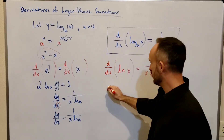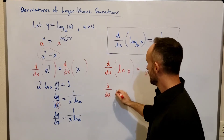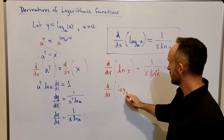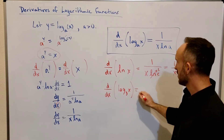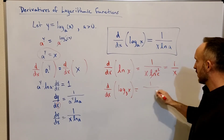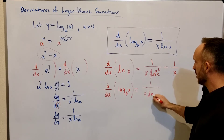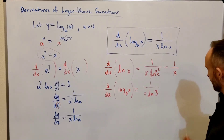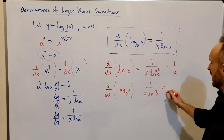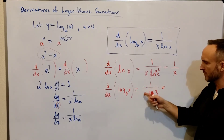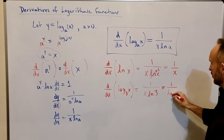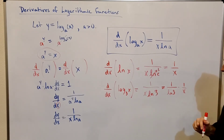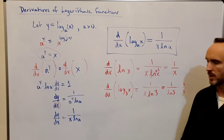Let's do another example — log base 3 of x. That's going to be 1 over x times the natural log of 3. If you wanted to separate the coefficient, you could write it as 1 over the natural log of 3, times 1 over x, but the combined form is the most typical way to write it.